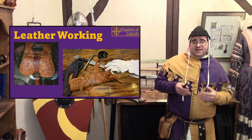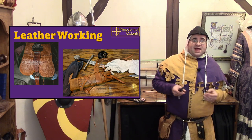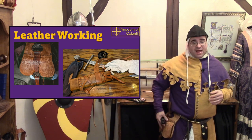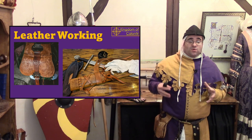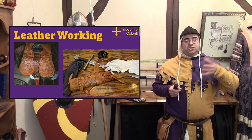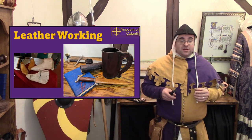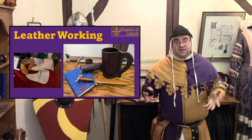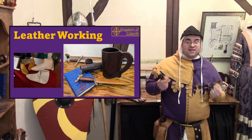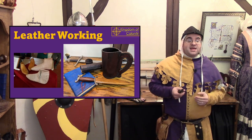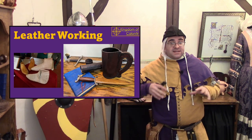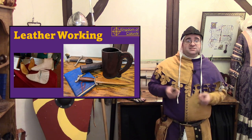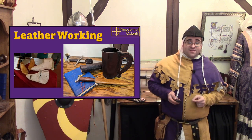Leather is one of those materials that goes far back in human history, and there are many useful things that can be constructed from leather. Obviously, leather pouches become second nature when participating in the SCA, but also things like shoes, gloves, scabbards, drinking vessels like leather jacks, book covers, or penner cases. Leather-working tools are fairly inexpensive to get started with, so it's easy to get going.